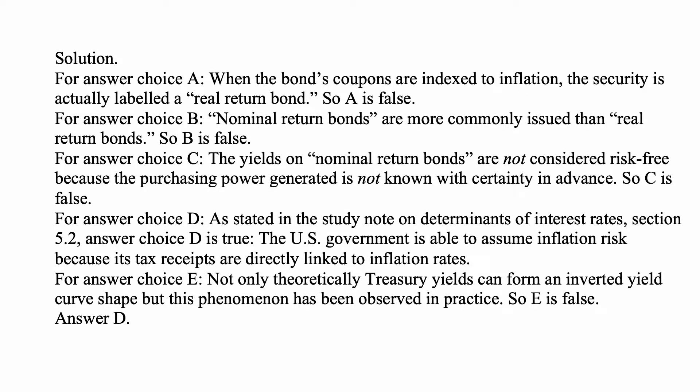A is false, because when coupons are indexed to inflation the security is labeled a real return bond. B is false — nominal return bonds are more commonly issued than real return bonds. C is false — the yields on nominal return bonds are not considered risk-free because purchasing power is not known with certainty in advance. D is true — as stated in the study note on determinants of interest rates, section 5.2, the U.S. government is able to assume inflation risk because its tax receipts are directly linked to inflation rates. E is false — not only theoretically but in practice, treasury yields have formed an inverted yield curve shape. The answer is D.